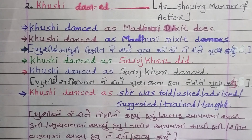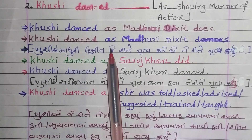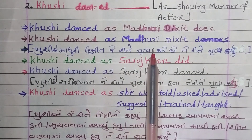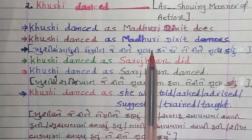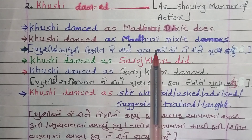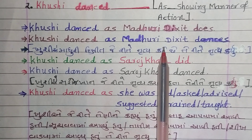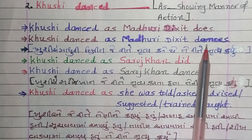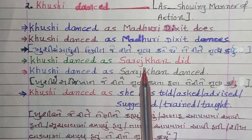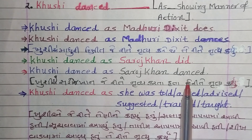હવે વ્હાલા વિદ્યાર્થી મિત્રો, Showing Manner of Action માં 'as' પછી જે આપણે નામ અથવા કર્તા લઈએ છીએ, તે આપણા માટે મહત્ત્વનું બને છે. જો તે હયાત હોય, તો 'does' કે 'do' મૂકીએ. જો હયાત ન હોય, તો 'did' મૂકીએ. જો હયાત હોય અને એક વચણ હોય, તો 'does' મૂકીએ. 'as' પછીનું જે નામ છે — તે હયાત, જીવિત, એક વચણ — તો -s/-es પ્રત્યયવાળું ક્રિયા પદ મૂકીએ.